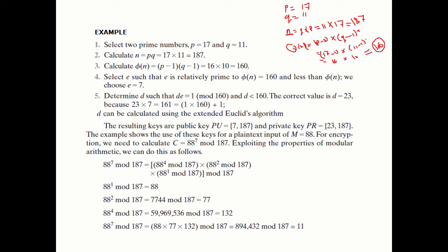So phi(n) = 160. Now we choose E = 7, which is a prime number. The encryption ciphertext equals M^E mod n.